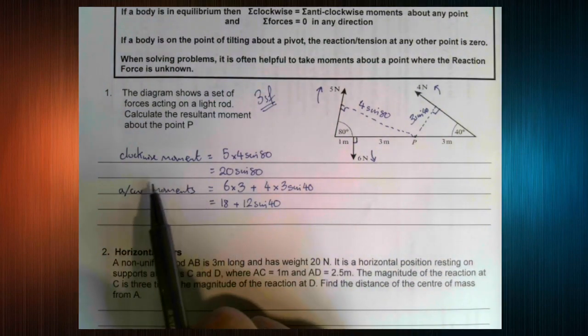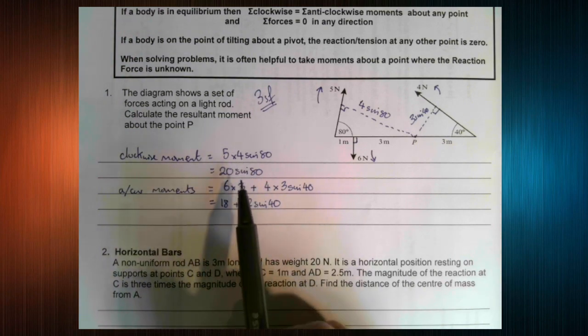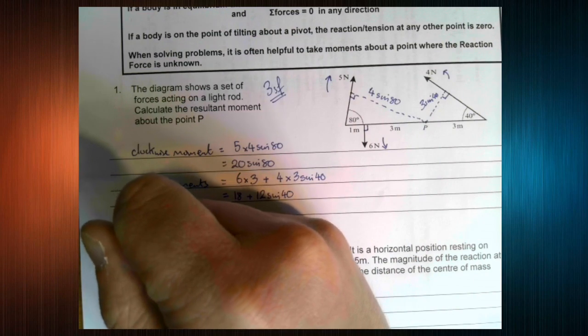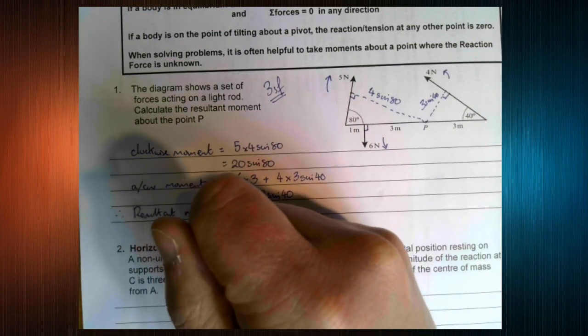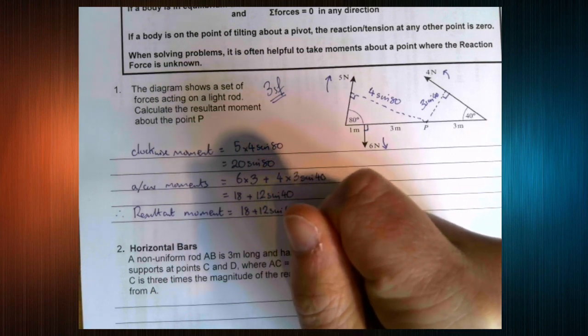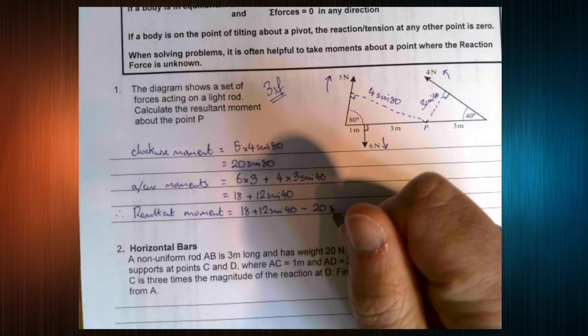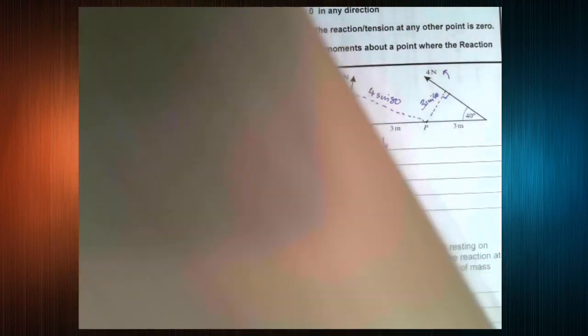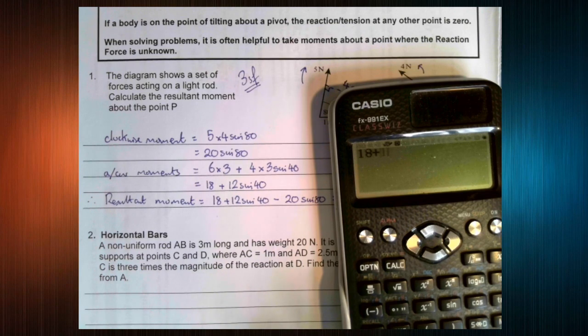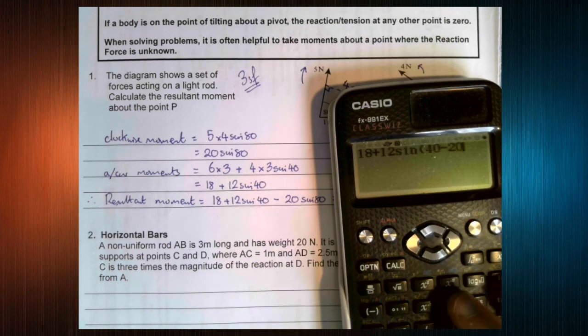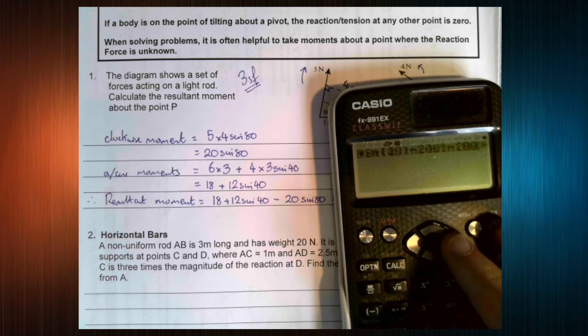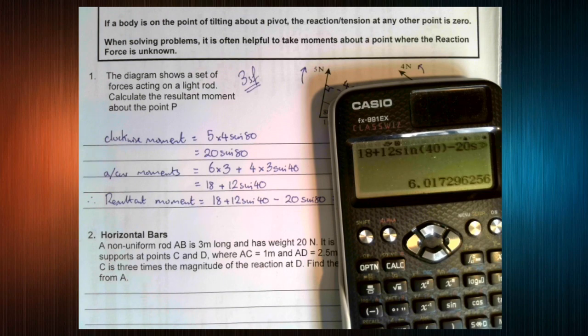Now, we can see that the anti-clockwise moments are probably going to be bigger than the clockwise. Even before doing any maths, we can see that that's likely to happen. So we can say the resultant moment is anti-clockwise minus clockwise. Stick that all in our calculator. So we've got 18 plus 12 sine 40 minus 20 sine 80. Let's put some brackets in to make sure our calculator doesn't have a moment.